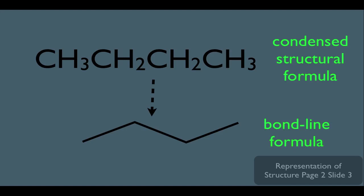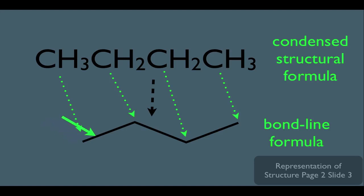Let me tell you how to interpret these. Basically, this carbon right here represents that point right there. This carbon is represented here. This carbon is represented here, and this one represented here. So what this means is that in the bond-line formula, every end of a line represents a carbon. And every bend of the line right here also represents carbons. So notice in this representation, we're just representing the skeletal framework of the carbon chain.